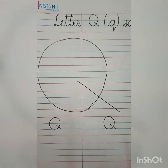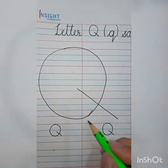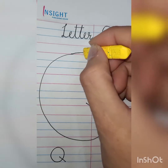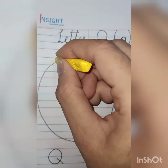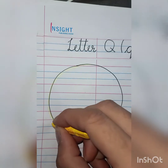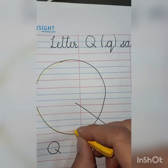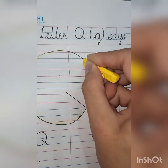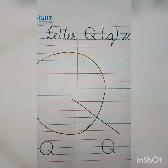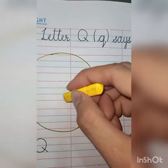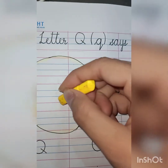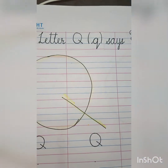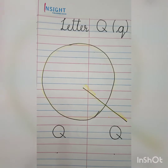Very good. So this is letter Q. Now let us trace. Where do you start from here? Make sure that when you do it, you have to complete it. You can do it — like this. And complete. After doing this, you have to make a slanting line like this. You have to trace it like this. Letter Q.